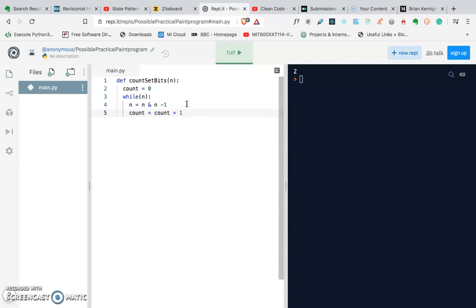So what's happening here is whenever I do n AND n minus one, that is removing a set bit from the binary number. So suppose this n had two set bits. This operation, when the operation runs one time, it will remove one set bit and we increase the counter by one.